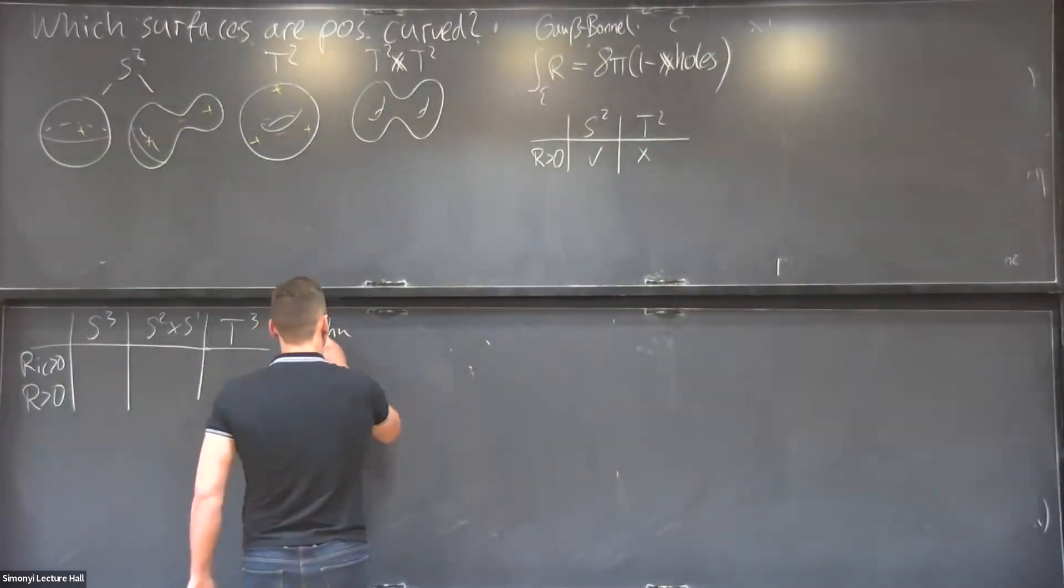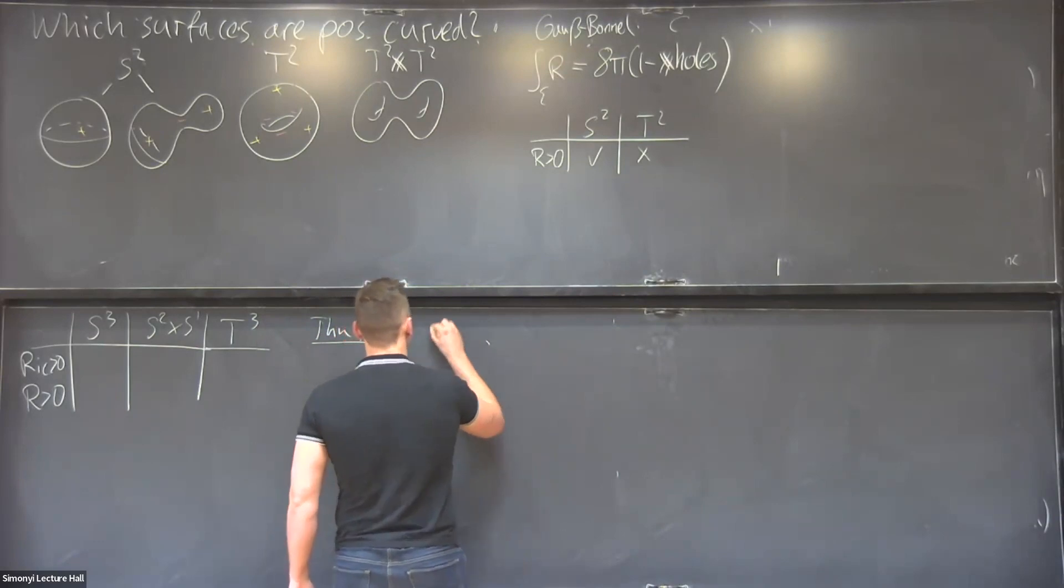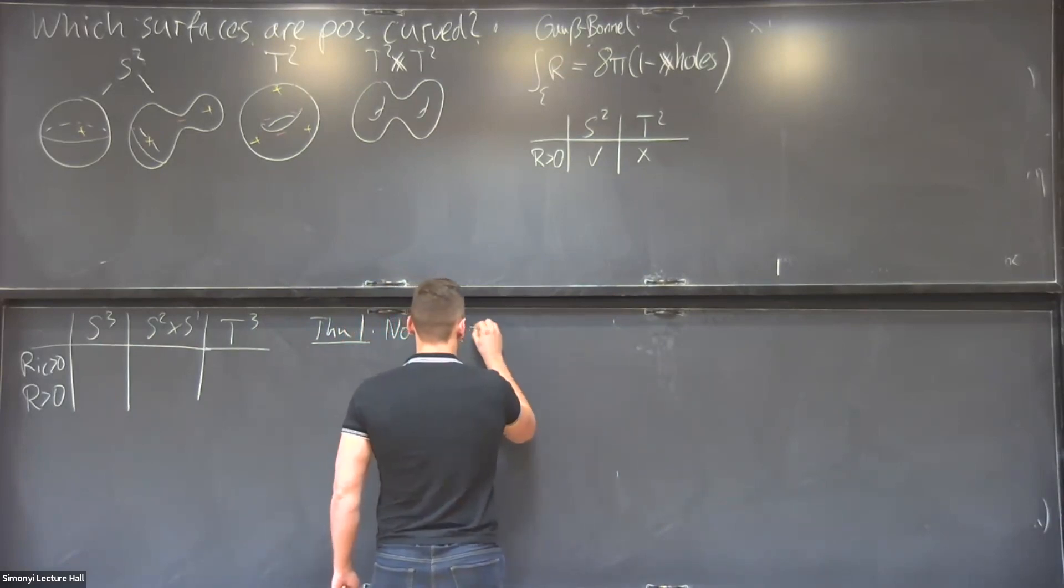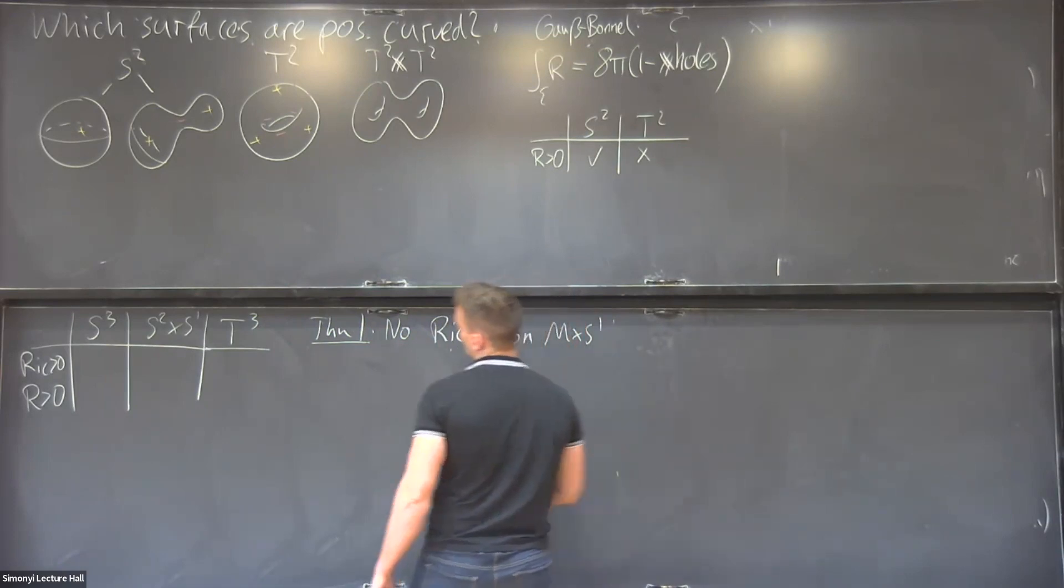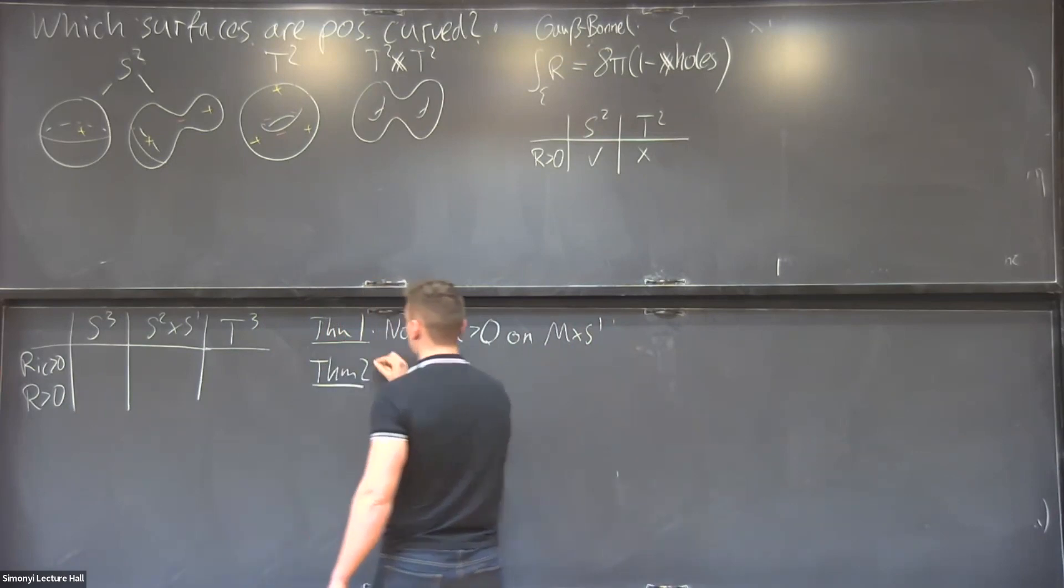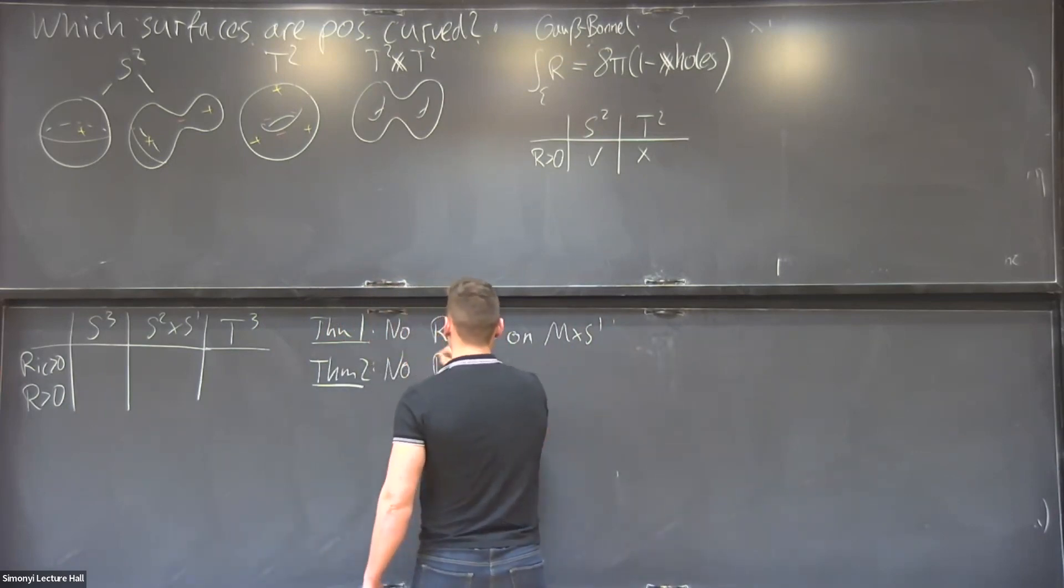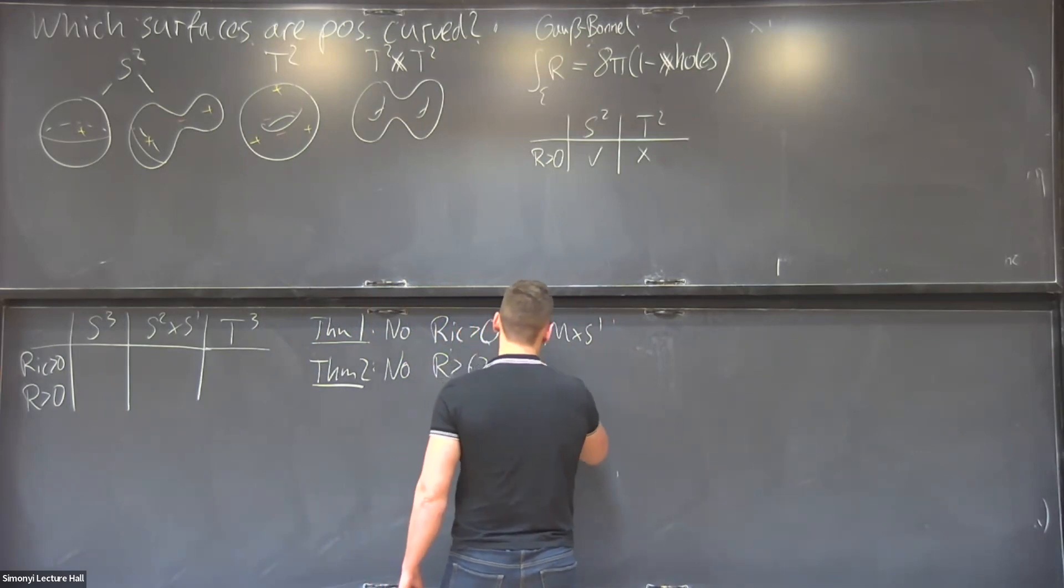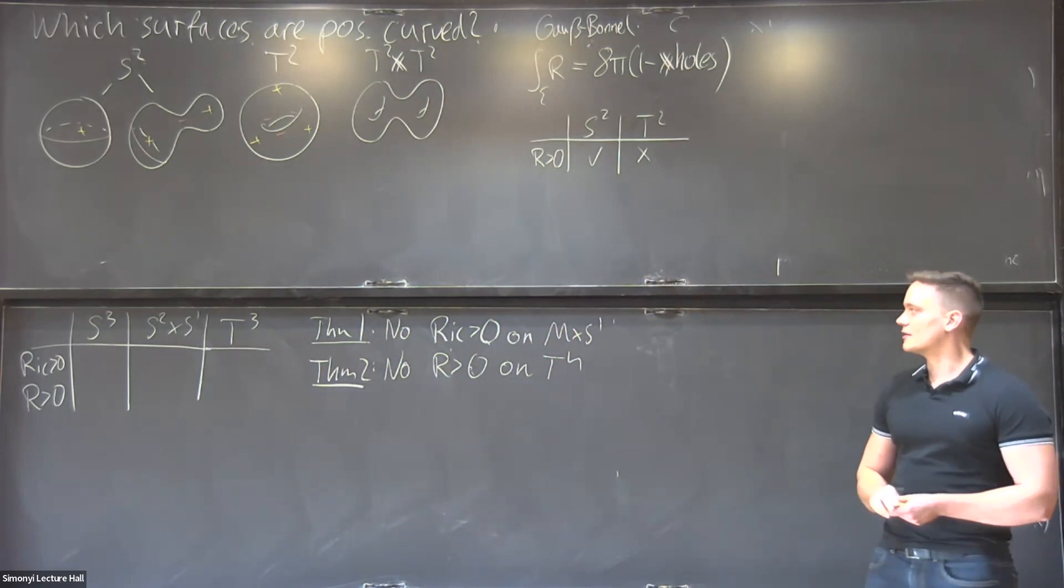And the first theorem is basically a corollary of Bonnet-Myers. And this tells us that there's no positive Ricci curvature on M × S¹. And similarly, there's also a scalar curvature result, which was due to Schoen-Yau, Gromov-Lawson, and says that there's no positive scalar curvature on the torus T^n.